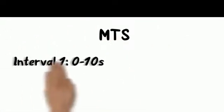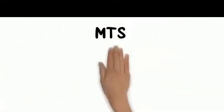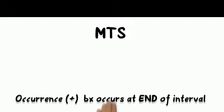MTS is a time sampling procedure. In time sampling, you divide the observational period into equal intervals. When using momentary time sampling, pay attention to the individual at the very end of the interval. If the behavior occurs at that brief moment, record an occurrence.